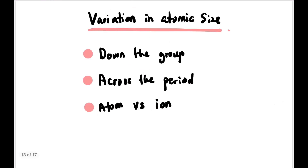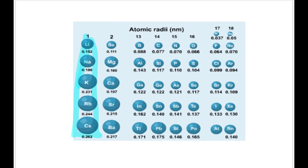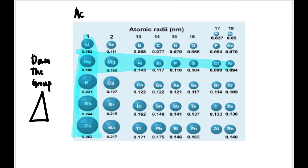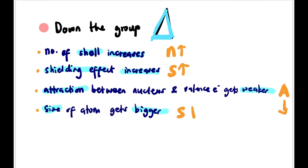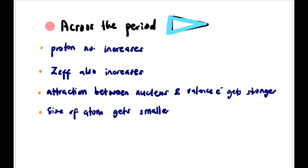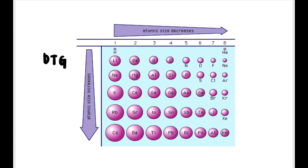Now let's look at the variation of atomic size down the group and across the period. Down the group, the trend is that size gets bigger; across the period, size gets smaller. Down the group: number of shells increase → shielding effect increases → attraction between nucleus and valence electron gets weaker → size of atom becomes bigger. Use the mnemonic NSAS: N increases → Shielding effect increases → Attraction decreases → Size increases. Across the period, use PIZAZZ: Proton number increases → Zeff increases → Attraction increases → Size smaller.